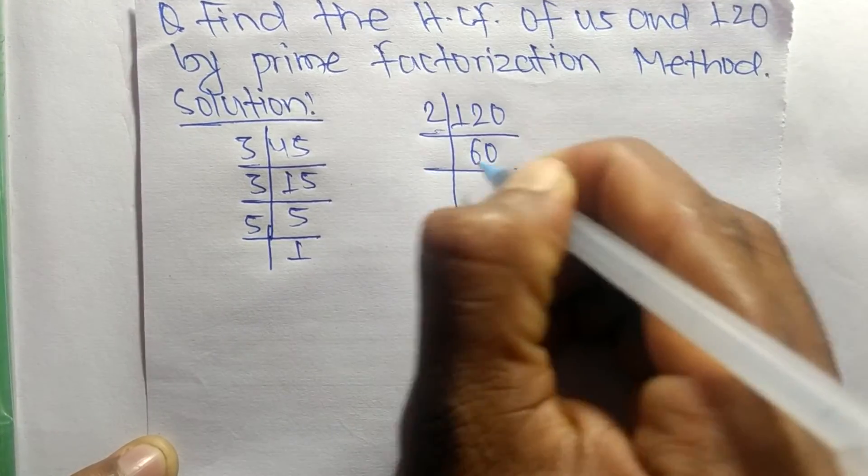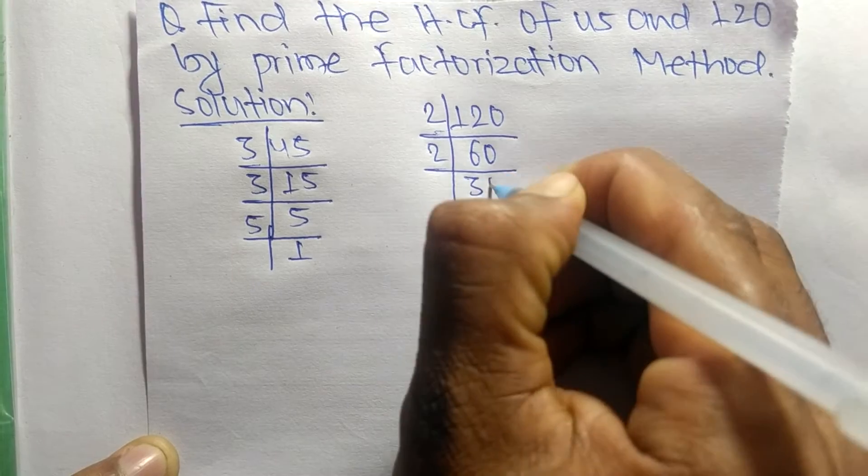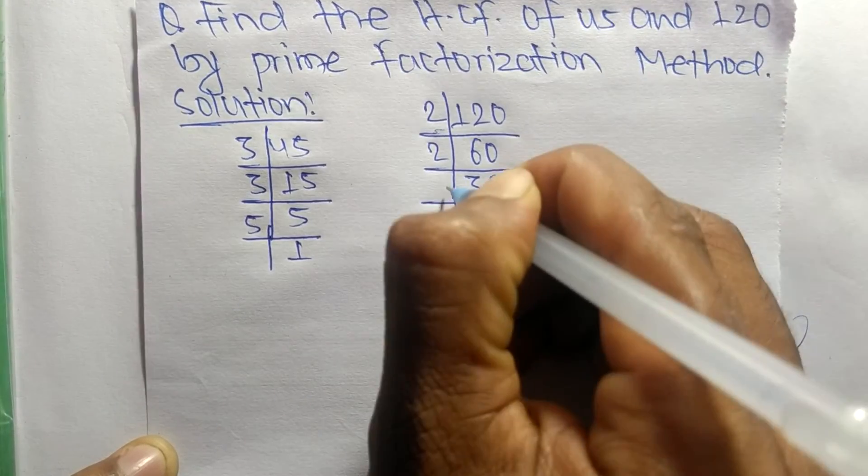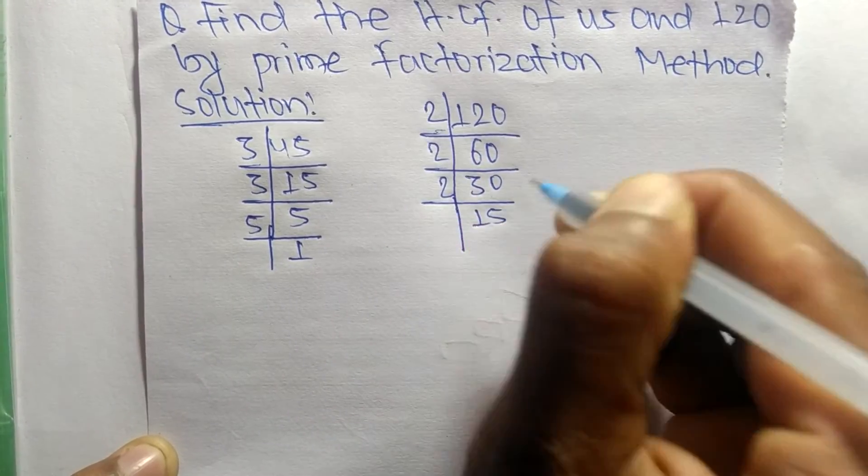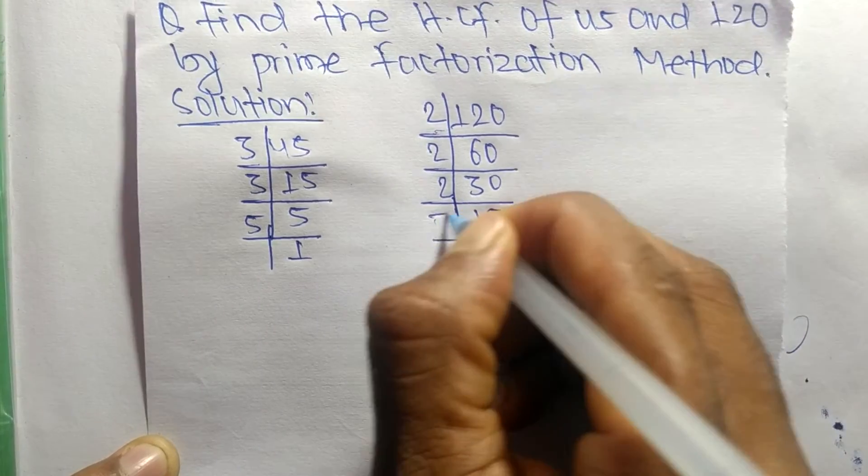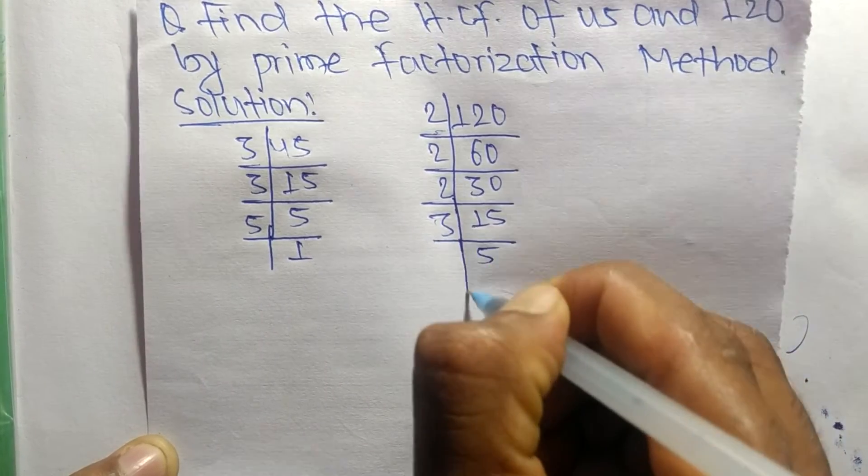2 times 30 equals 60, 2 times 15 equals 30, and 3 times 5 equals 15, and 5 times 1 equals 5.